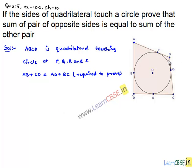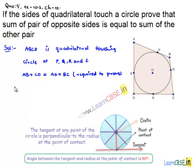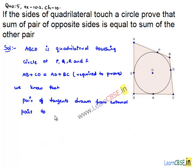From each and every point of the quadrilateral, we are seeing that two tangents are drawn to the circle. We know that pair of tangents drawn from external point to circle are equal in length.